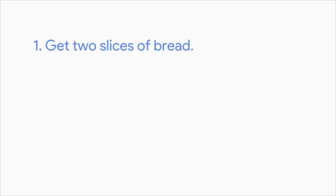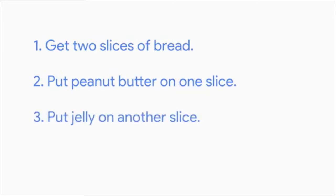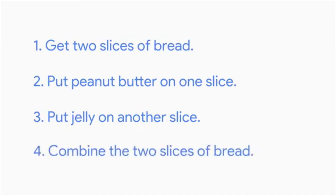Let's say I want to make a peanut butter and jelly sandwich. I see a pretty good recipe and send it to our chef to make. Our chef needs these instructions quickly, so I don't send her the entire recipe — I send her one line at a time. One: get two slices of bread. Two: put peanut butter on one slice. Three: put jelly on another slice. Four: combine the two slices of bread. Our chef can only communicate with us in ones and zeros, so instead of sending something readable like that recipe, we have to send her something in binary.